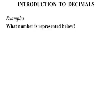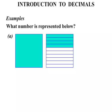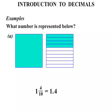Let's look at some examples now. What number is represented below? In this particular one, we certainly have one whole, so we'll write one. And in this part of the diagram, 4 tenths. As a decimal, we write the one, and the four tenths can be written as 0.4 — so the number is 1.4. Because it's over ten, we expect to see one decimal place.